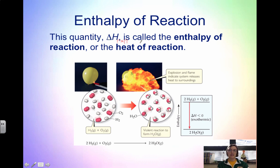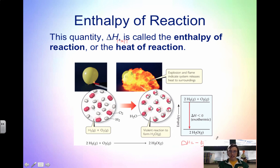When you have a balanced equation with the associated enthalpy change — for example, delta H equals negative 500 kilojoules — this entire thing is called a thermochemical equation. A balanced equation paired with delta H is a thermochemical equation. This will be very useful when we get into Hess's law.